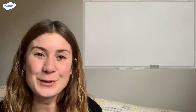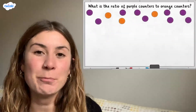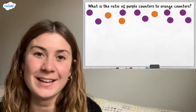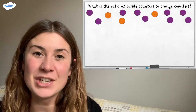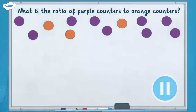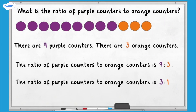Now it's your turn. What is the ratio of purple to orange counters here? Remember to simplify the ratio if you can. There are nine purple counters and three orange counters. The ratio of purple counters to orange counters is nine to three. We can divide both numbers by three to simplify the ratio to three to one.